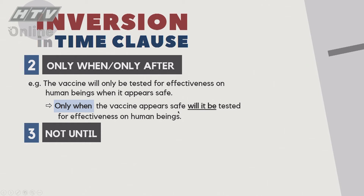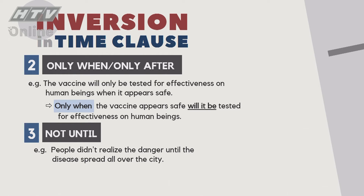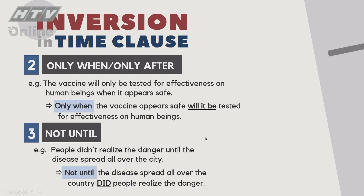Cấu trúc 'Not Until': người ta chủ quan, không nhận ra mối nguy hiểm cho tới khi căn bệnh tràn lan khắp thành phố. Câu gốc có 'didn't' (did not) và 'until' phía sau. Chúng ta lấy 'Not Until' lên đầu câu: 'Not until the disease spread all over the city did people realize the danger.' Mãi đến khi bệnh tràn lan thì người ta mới nhận ra sự nguy hiểm.